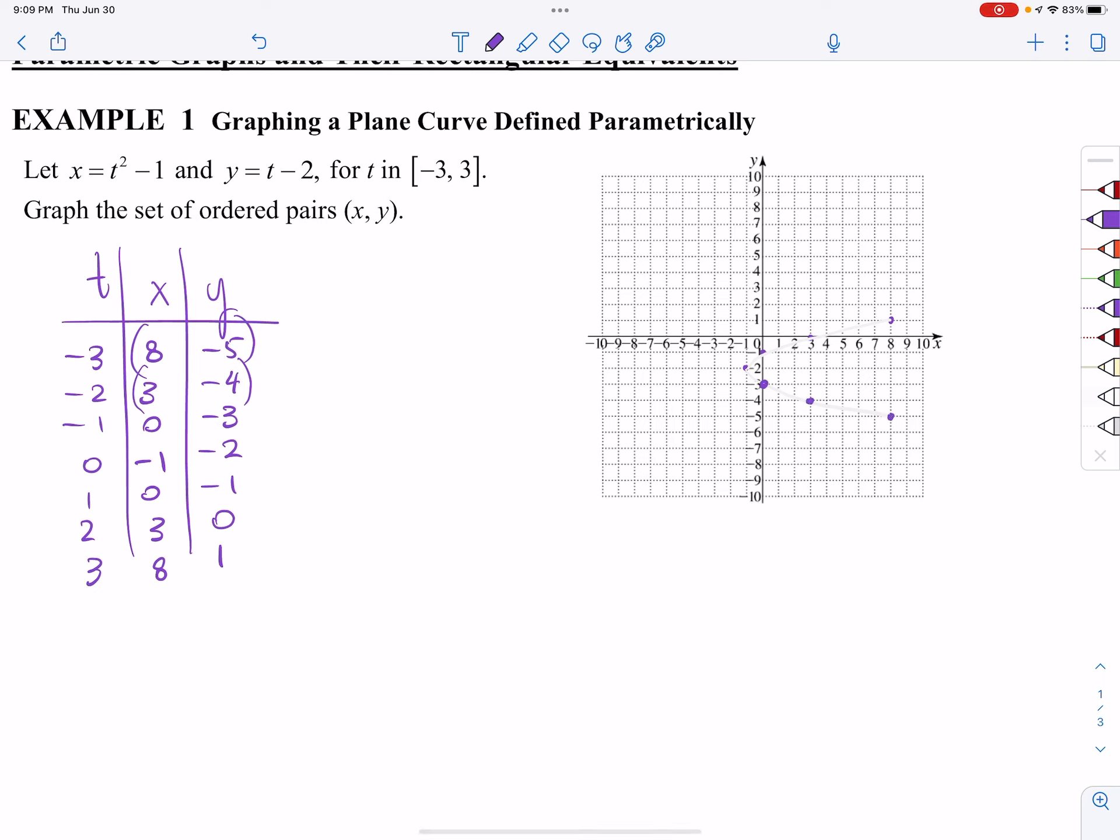0, negative 3, negative 1, negative 2, 0, negative 1, 3, 0, and 8, 1. And what I have, it appears, is going to be a sideways parabola.